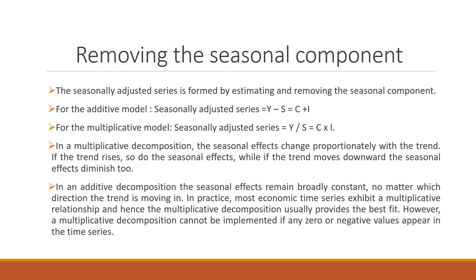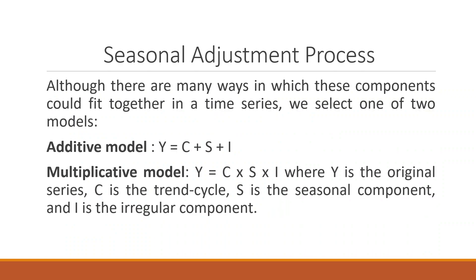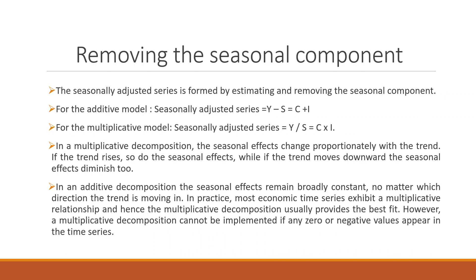Removing the seasonal component: the seasonally adjusted series is formed by estimating and removing the seasonal component. For the additive model, we simply subtract the seasonal component from Y, and whatever is left is C + I — the trend cycle and the irregular component. In the case of the multiplicative model, we simply divide the series by the seasonal component, so the seasonally adjusted series Y/S = C × I. In multiplicative decomposition, the seasonal effects change proportionally with the trend — if the trend moves upward the seasonal effects grow, while if the trend moves downward the seasonal effects diminish.